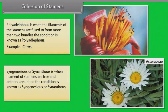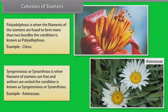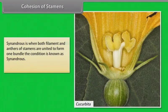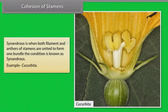Syngenesious or synantherous — filaments of stamens are free and anthers are united, example Asteraceae. Synandrous — both filaments and anthers of stamens are united to form one bundle, example Cucurbita.